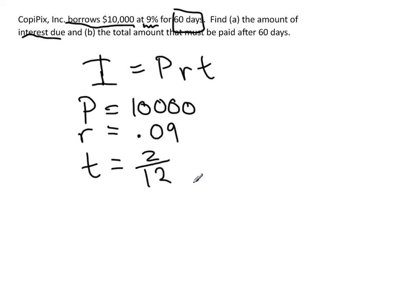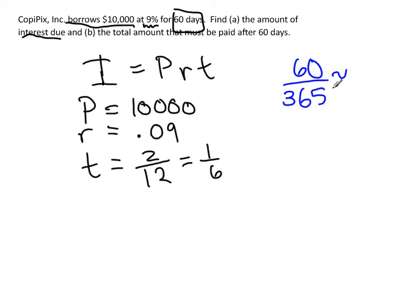Technically 60 days out of 365 would be more precise, but we approximate 60 out of 360 as one-sixth for simplicity. A banker would need the exact figure, but as mathematicians we use approximately one-sixth of a year. So T equals one-sixth.